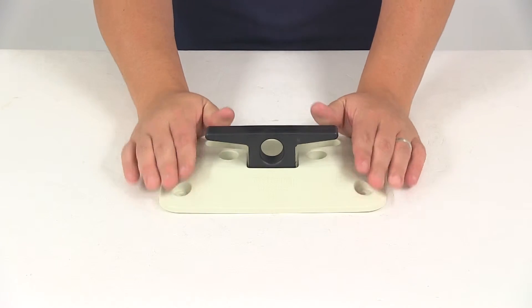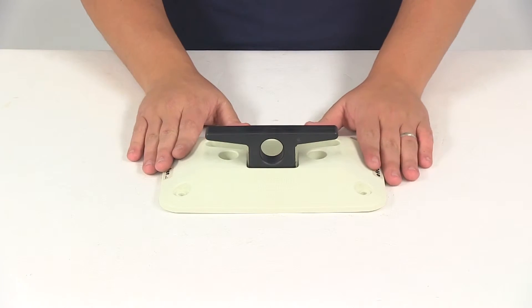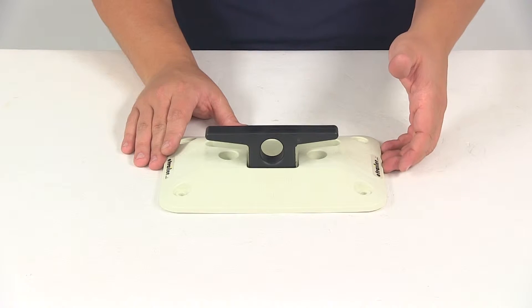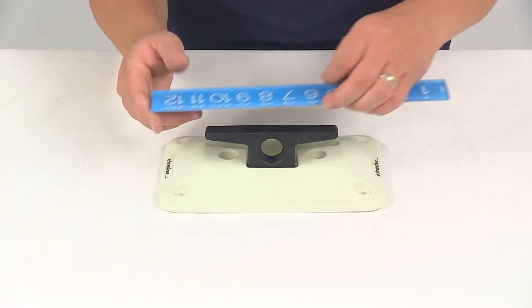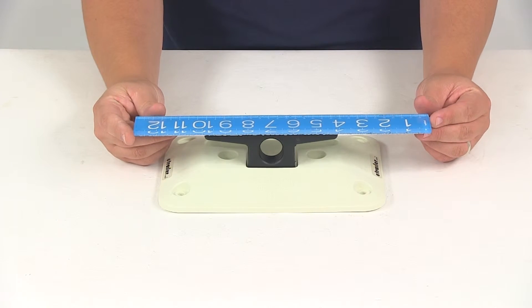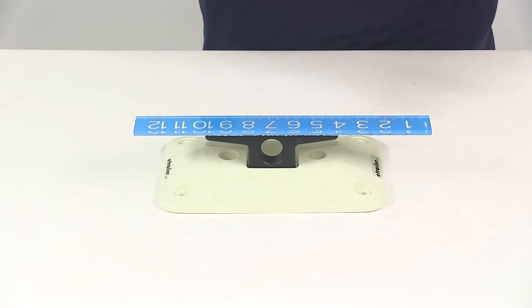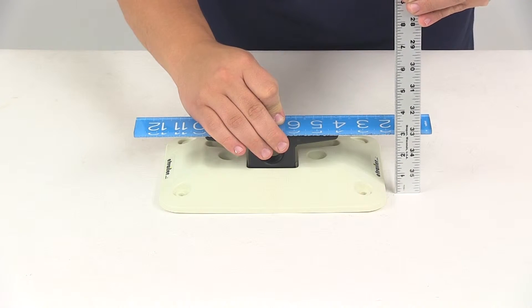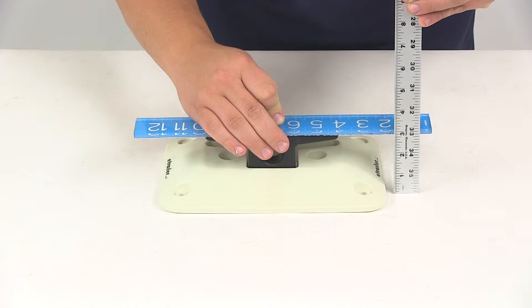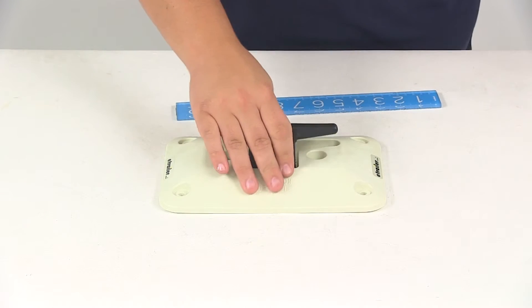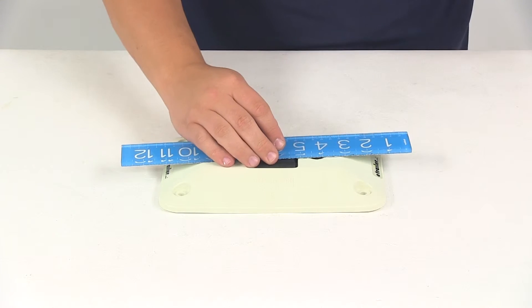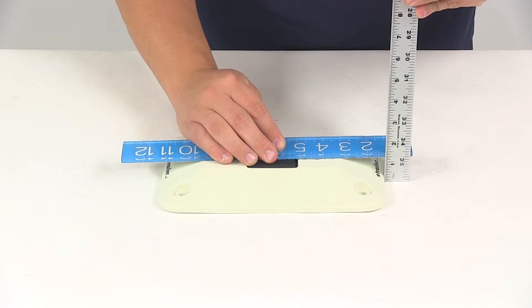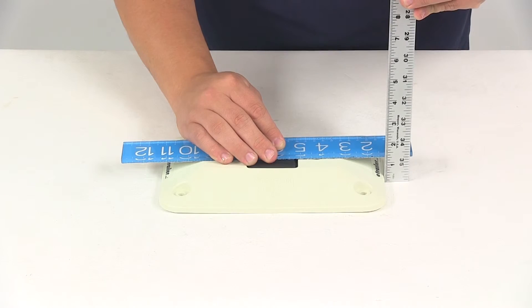Now with the cleat in the up position, it's going to have an extended height measuring from the bottom of the base to the top of the cleat. We'll lay a straight edge going across here and we can take a measurement of that. It's going to measure about two and three quarters of an inch. Now with it retracted, that's going to give us a measurement of about an inch and a quarter.